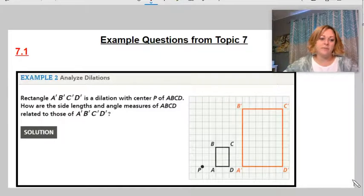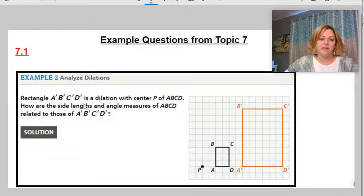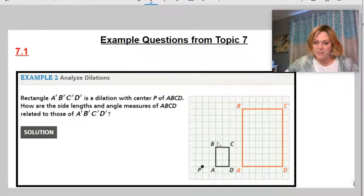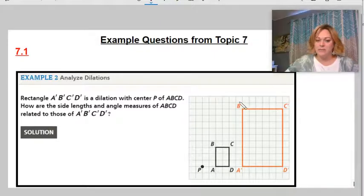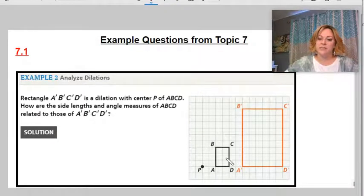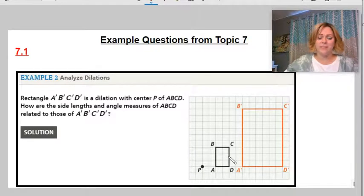So first of all, in example two in seven one, it says here's the rectangle. It's a dilation and the center's at P. So a dilation, look for the things without the prime. These ones have the prime, that little tick mark or apostrophe. So this is the pre-image down here. This is the image after the fact.